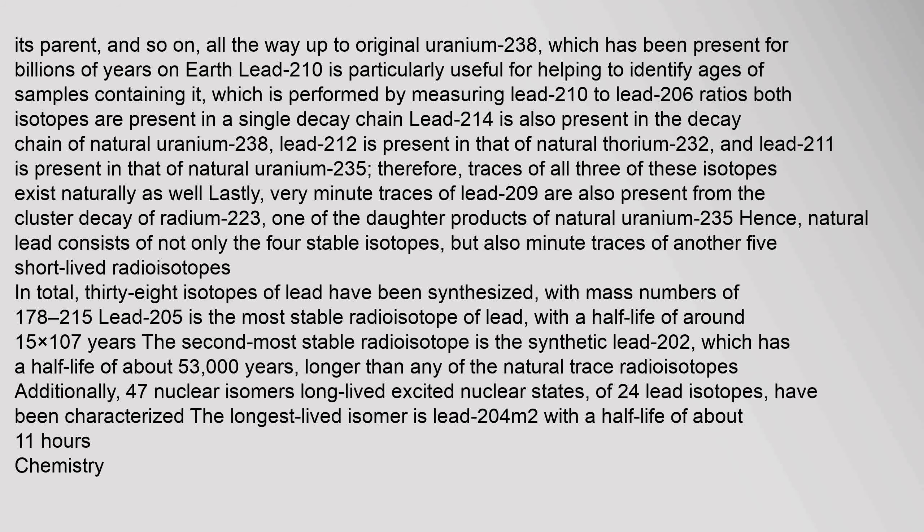Lead-210 is particularly useful for helping to identify ages of samples, performed by measuring lead-210 to lead-206 ratios — both isotopes are present in a single decay chain. Lead-214 is also present in the decay chain of natural uranium-238; lead-212 is present in that of natural thorium-232; and lead-211 is present in that of natural uranium-235. Traces of all three exist naturally. Very minute traces of lead-209 are also present from the cluster decay of radium-223. Natural lead consists not only of four stable isotopes, but also minute traces of another five short-lived radioisotopes. In total, 38 isotopes of lead have been synthesized, with mass numbers of 178–215. Lead-205 is the most stable radioisotope of lead, with a half-life of around 1.5 × 10^7 years.